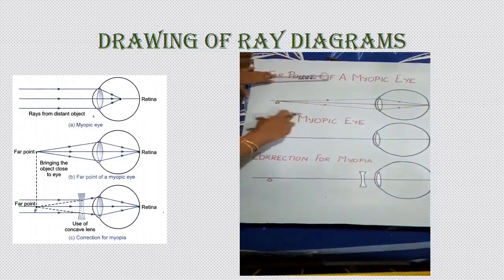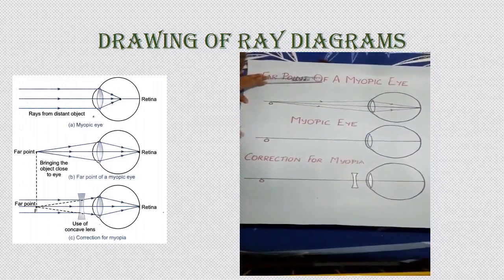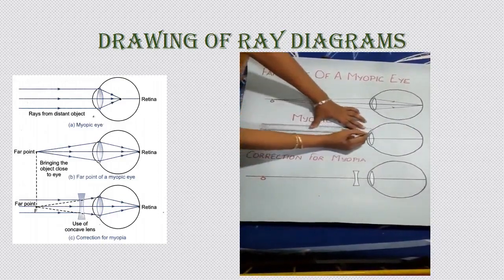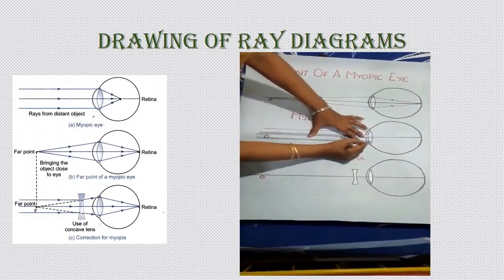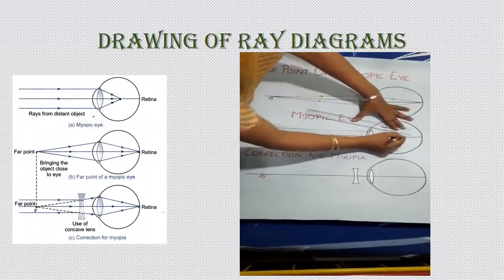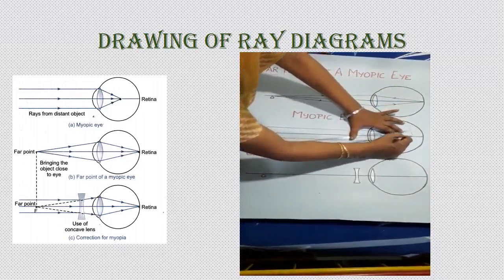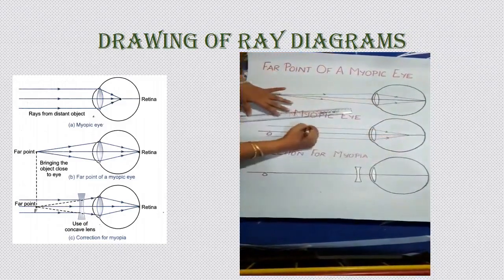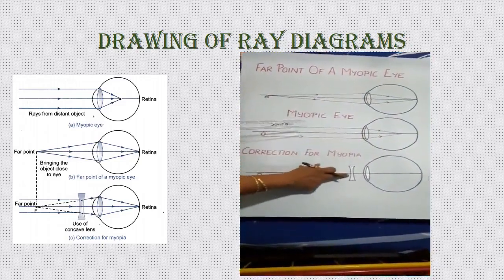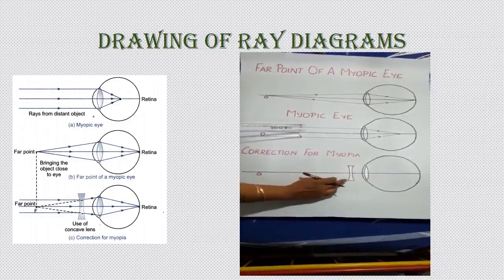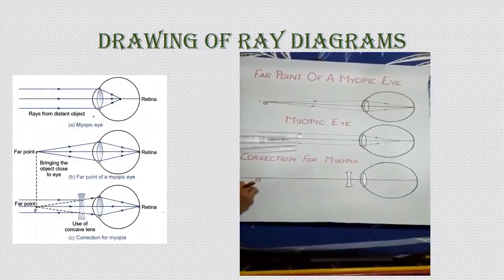For a myopic eye, if an object is placed beyond O — at a far-off distance — parallel rays come in, and the image is formed in front of the retina, so you don't get a clear image. To correct this, you use a concave lens of appropriate focal length. The focal length of the concave lens is equal to the far point of the myopic eye.